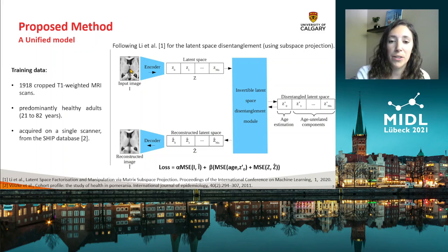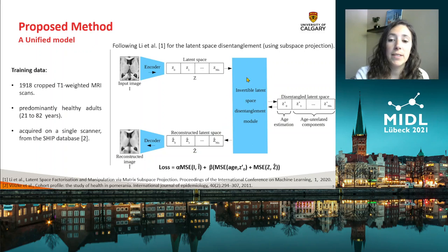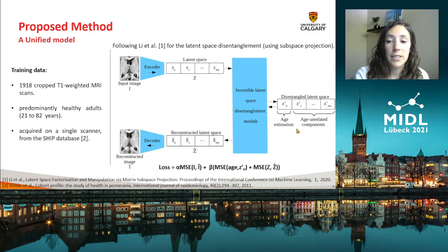The first part of our model consists of an autoencoder used to compress the input images into a low-dimensional latent space. Second, we have an invertible latent space disentanglement module that organizes the latent space such that the first component contains the age estimation and the remaining components contain the age-unrelated information.